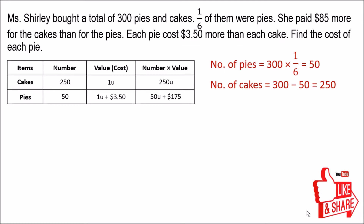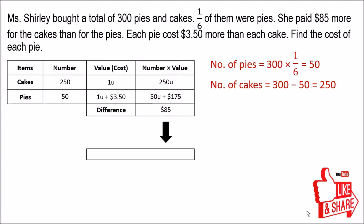The question says she paid $85 more for the cakes than for the pies, so the difference in the amounts spent is $85. Using this information, we draw the bar model. We split 250 units into 50 units and 200 units.